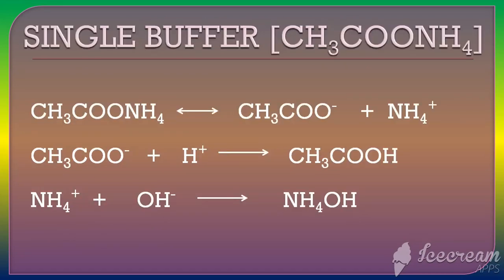The first classification is the single buffer, which is a one-compound buffer — specifically, a salt of a weak acid and a weak base. The example is ammonium acetate. Ammonium acetate is a salt of the weak acid acetic acid (CH3COOH) and the weak base ammonium hydroxide.